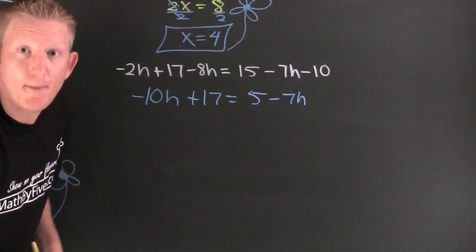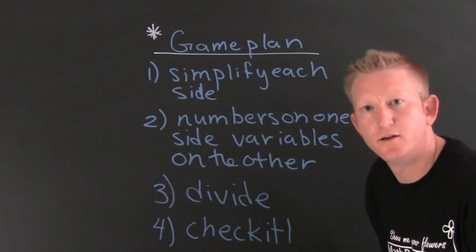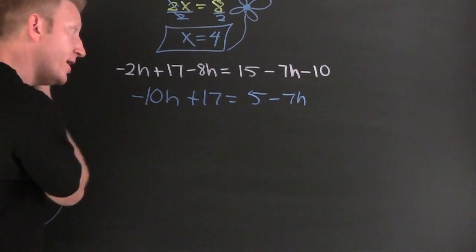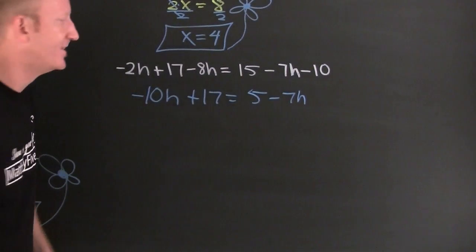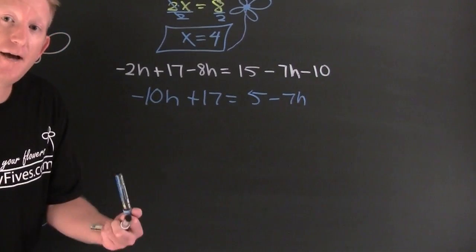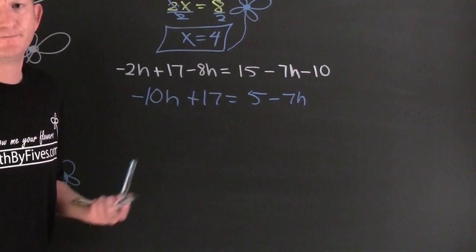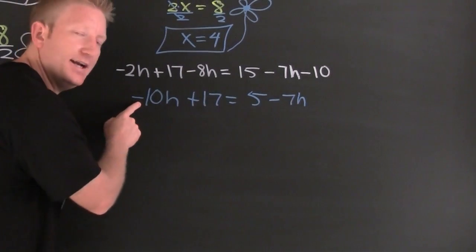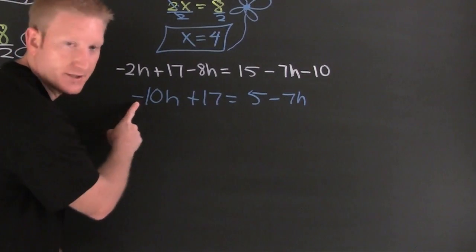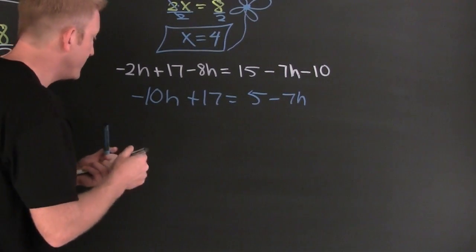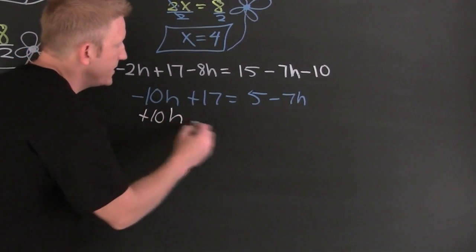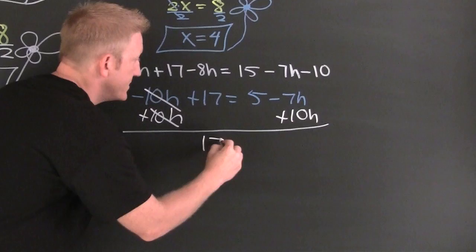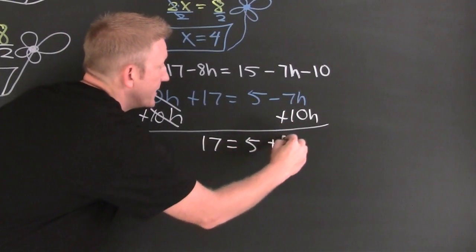Now I've got h's on both sides — want them on one side. Which side? Don't care. There are two types of people: left-siders, who have to have the h's on the left, or positive people, who have to have their variables positive. I'm going to be a positive person today. So I want to move that negative 10h over there — I need the additive inverse of minus 10h, which is 10h. And what you do to one side you must also do to the other. So I add 10h on both sides, and I'm left with 17 is equal to 5 plus 3h.